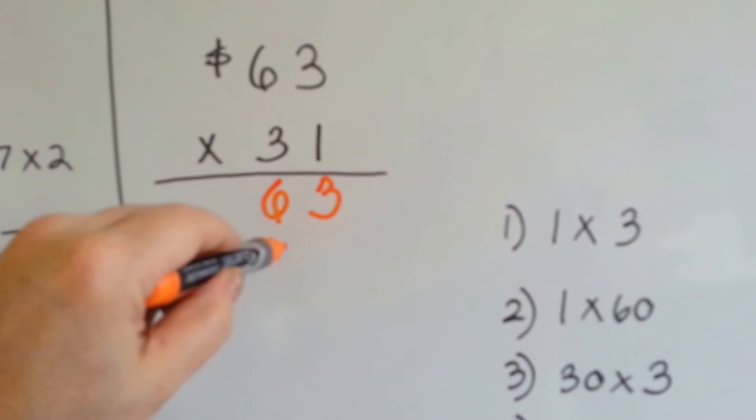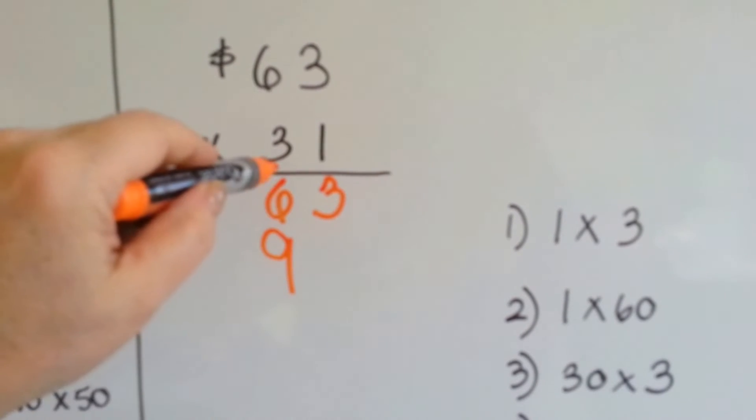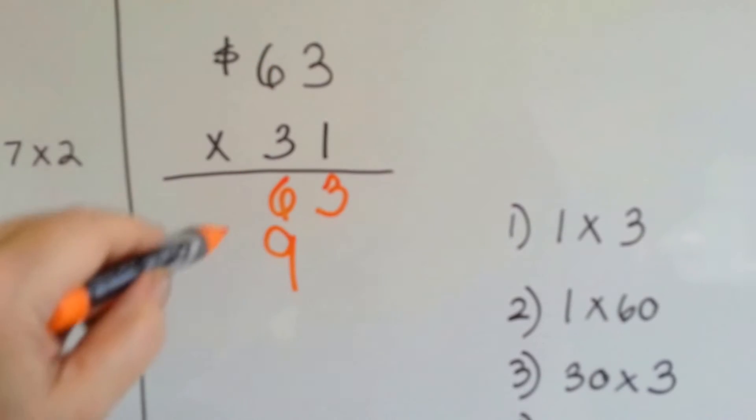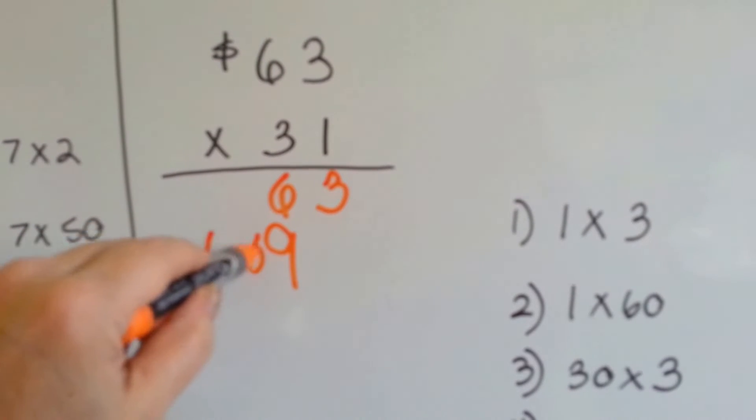Now we're going to multiply the 3 times 3, and because we're in the tens place, the answer is going to go in the tens place, and then 3 times 6 is 18, it's going to go next to it here.